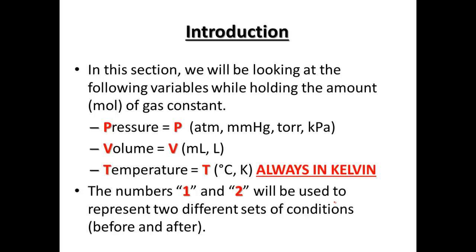To begin with, we're going to look at three variables. We're going to hold the amount of moles of a gas constant. P for pressure — units include atmospheres, millimeters mercury, torr, or kilopascals from our last section. Volume will be in milliliters or liters, so V for volume. T for temperature is always in Kelvin, so we'll need to convert Celsius to Kelvin. We're going to use subscripts 1 and 2 to represent two different states or conditions — 1 is before, and 2 is after.